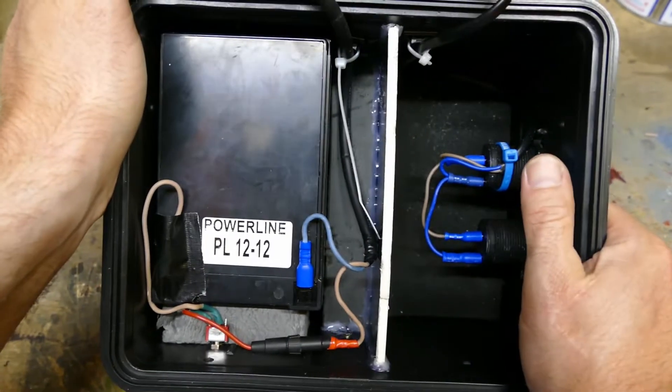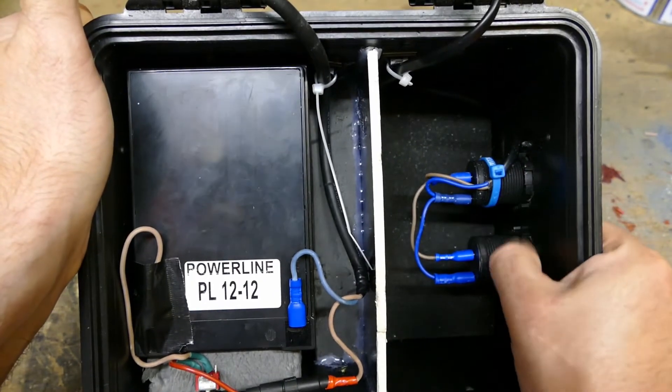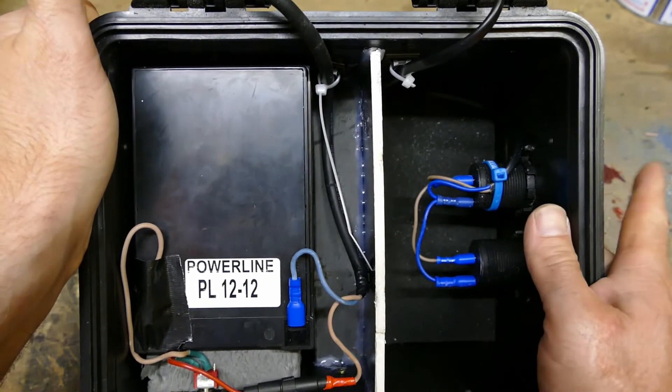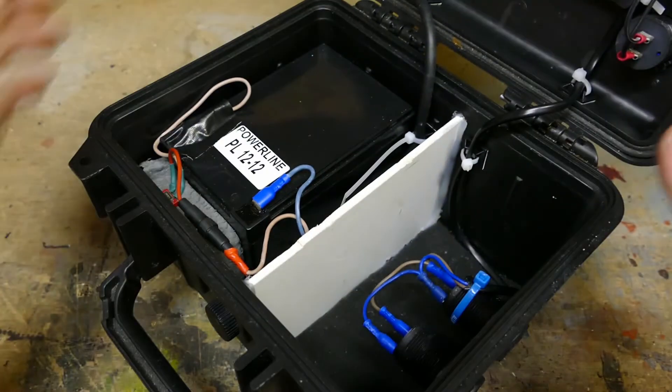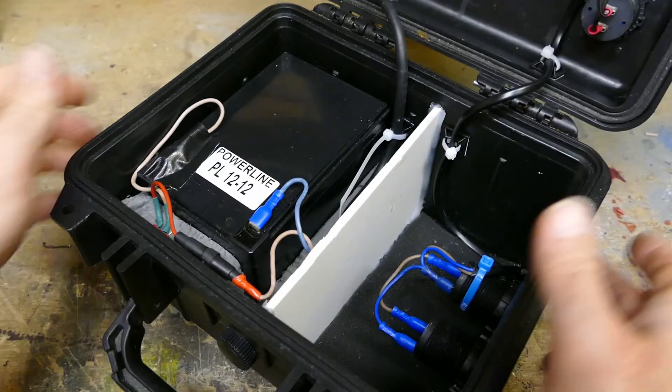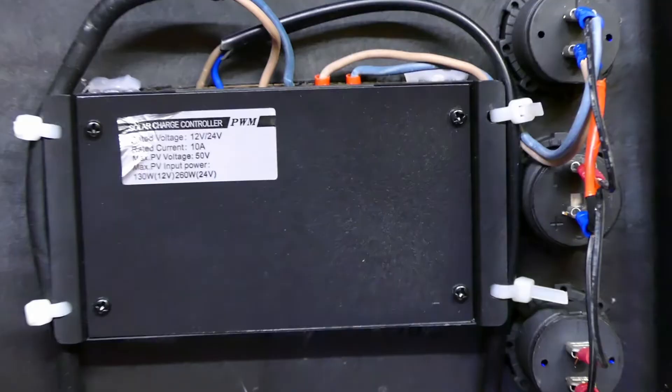This is the inside of the box. We have the 12 amp power battery on the left, with the switch and inline fuse. The solar sockets on the right, as you can see here, there are two of them, so I can double up on the solar power input.